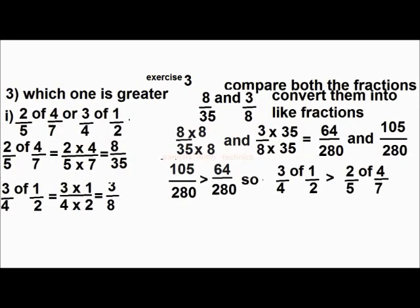Which one is greater: 2 by 5 of 4 by 7, or 3 by 4 of 1 by 2? 2 by 5 of 4 by 7 equals 2 into 4 by 5 into 7, that is 8 by 35. And 3 by 4 of 1 by 2 becomes 3 into 1 by 4 into 2, that is 3 by 8. Now compare both fractions: convert to like fractions — they become 64 by 280 and 105 by 280. Out of these, 105 by 280 is greater than 64 by 280. So, 3 by 4 of 1 by 2 is greater than 2 by 5 of 4 by 7.